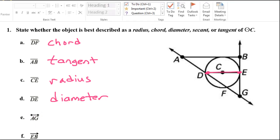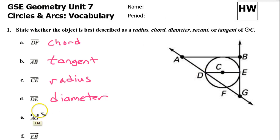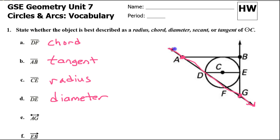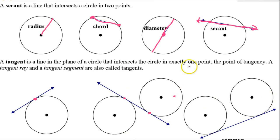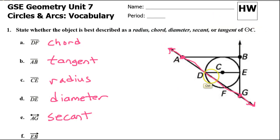What about line AG? Notice the line symbol over it. Here's point A and here's point G, so this is line AG. That is going to be a secant. Remember that a secant is a line that passes through the circle intersecting two points. That's what this is doing — it's a line that is cutting across the circle, intersecting here and here. That makes it a secant.